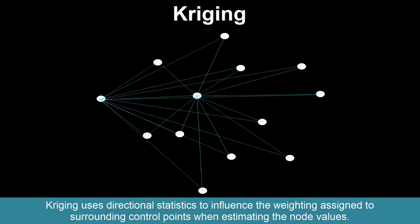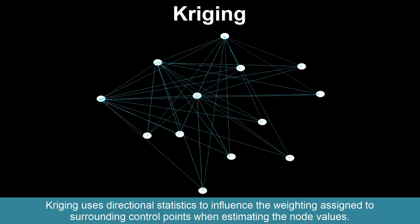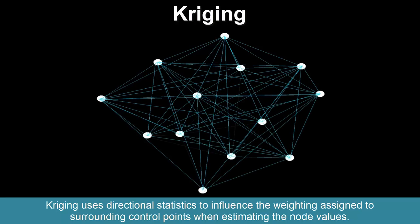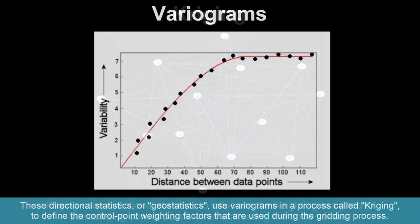Kriging uses directional statistics to influence the weighting assigned to surrounding control points when estimating node values. These directional statistics, or geostatistics, use variograms in a process called Kriging to define the control point weighting factors that are used during the gridding process.